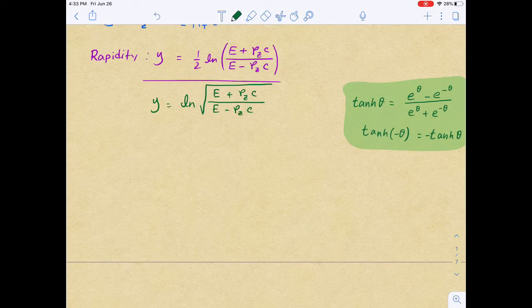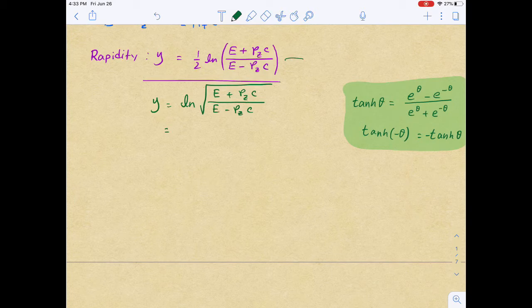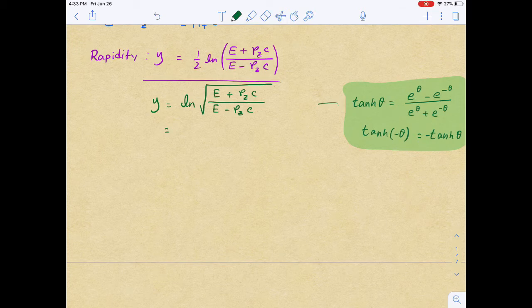That will be square root of E plus pzc divided by E minus pzc. Now, here comes the trick with the hyperbolic tangent that we will be using twice. So, what we'll try to do here right now, we'll just try to write it in a very simpler term compared to this natural log term.